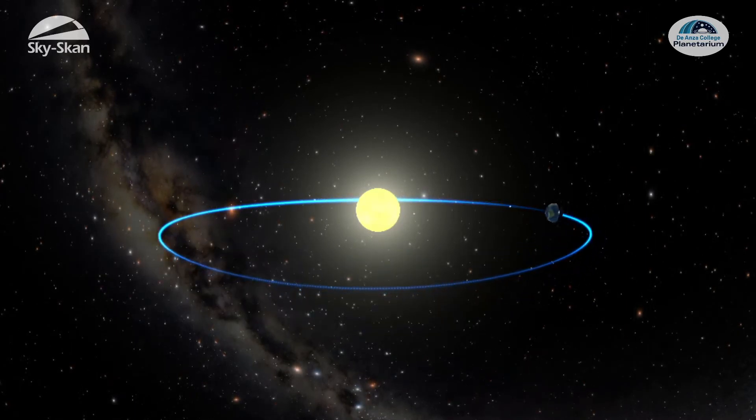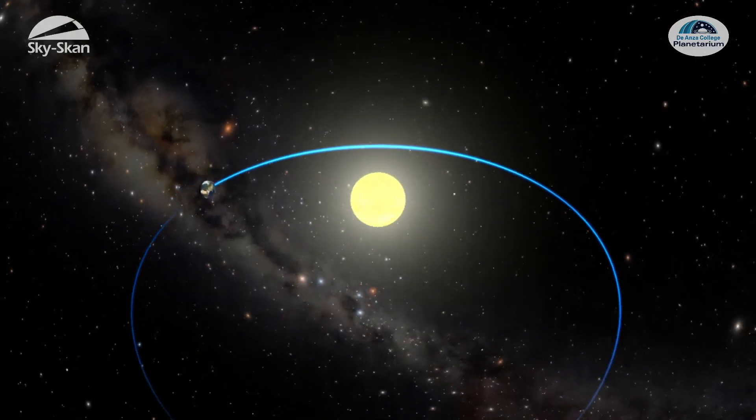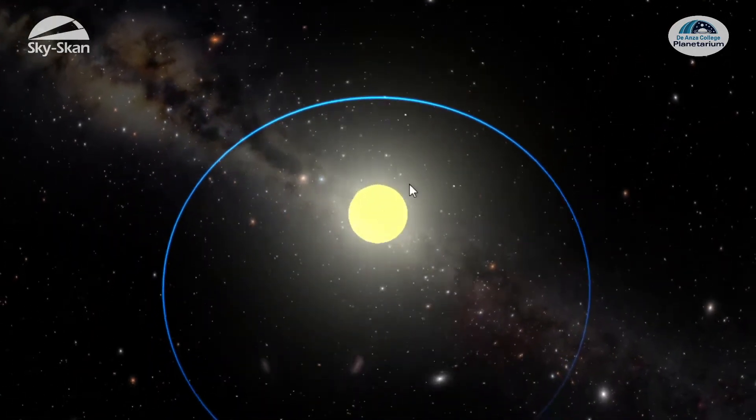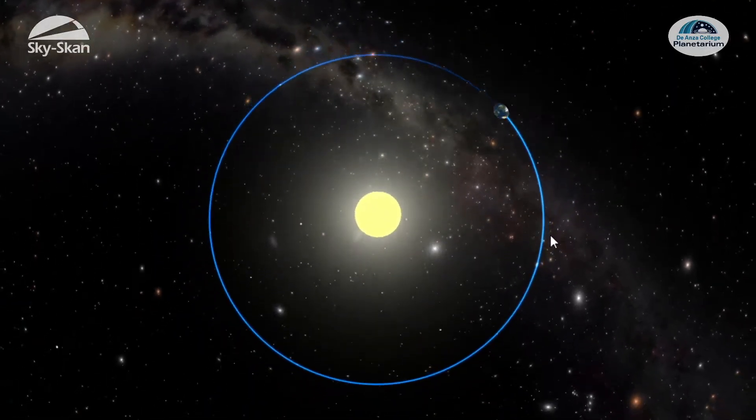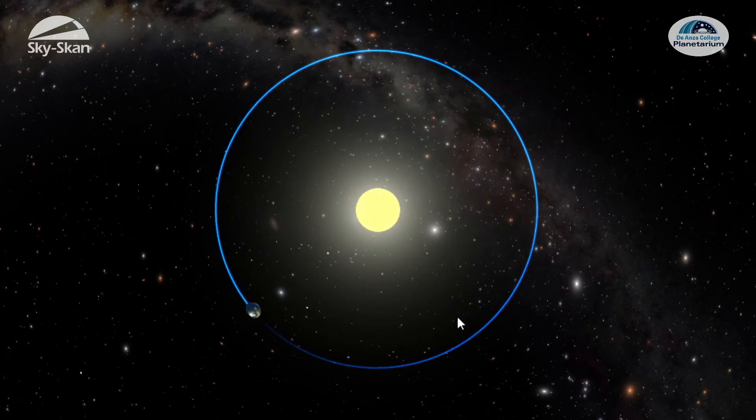But if we change our perspective and we take a look at Earth from top down as it goes around the Sun, we can see that Earth's orbit actually looks pretty circular. So as we watch Earth orbiting the Sun here, can you tell at what point Earth is actually closer to the Sun?